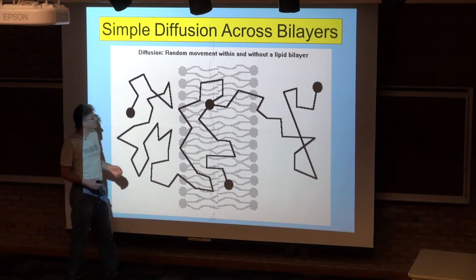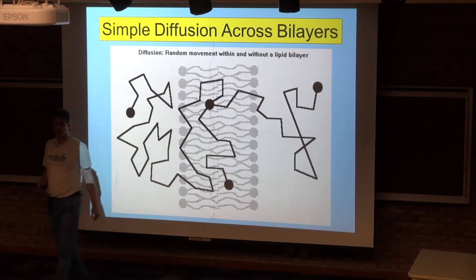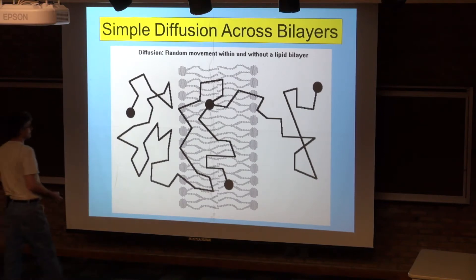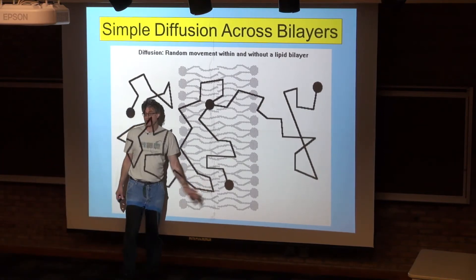In order for something to cross a lipid bilayer, it has to collide with the lipid bilayer. If it collides with the lipid bilayer, it might bounce off the lipid bilayer or it might enter into the lipid bilayer.